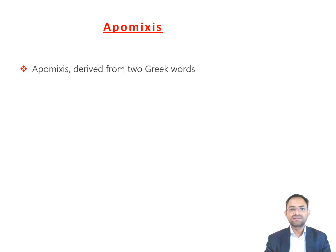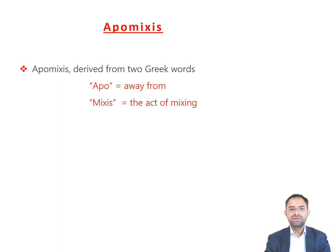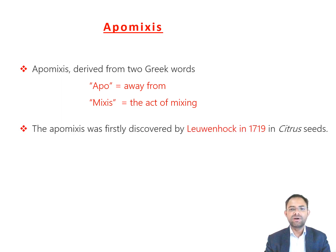Now, apomixis. In some plants, meiosis and syngamy are interrupted and still a viable embryo is formed within the seed. Such asexual seeds which produce progeny identical to the female parent are called apomictic seeds, and this phenomenon is called apomixis. Apomixis is derived from two Greek words: 'apo' means away from, and 'mixes' means the act of mixing — meaning away from syngamy, or the union of two gametes to form a zygote. Apomixis was first discovered by Leeuwenhoek in 1719 in citrus seeds.